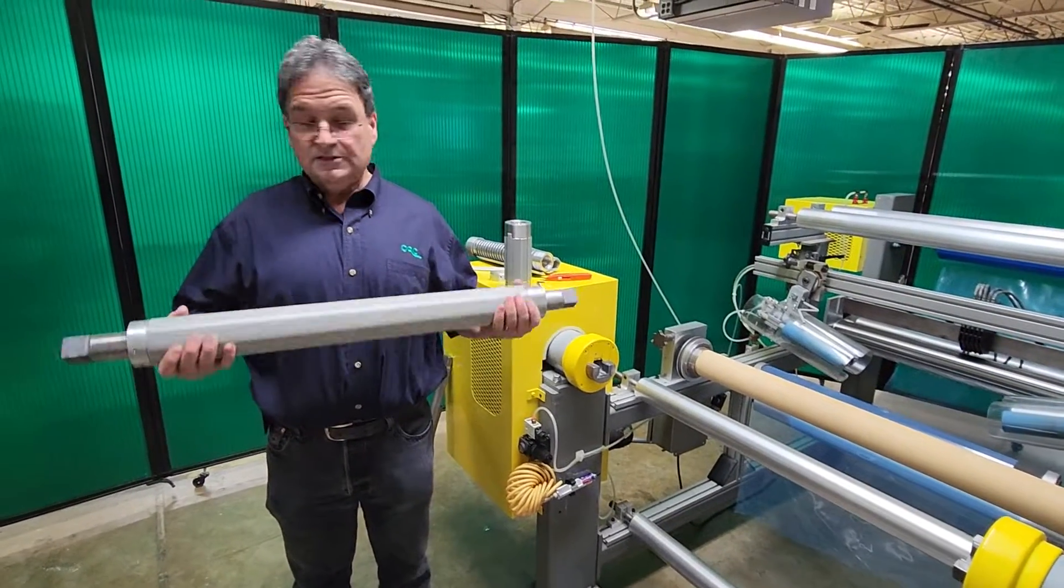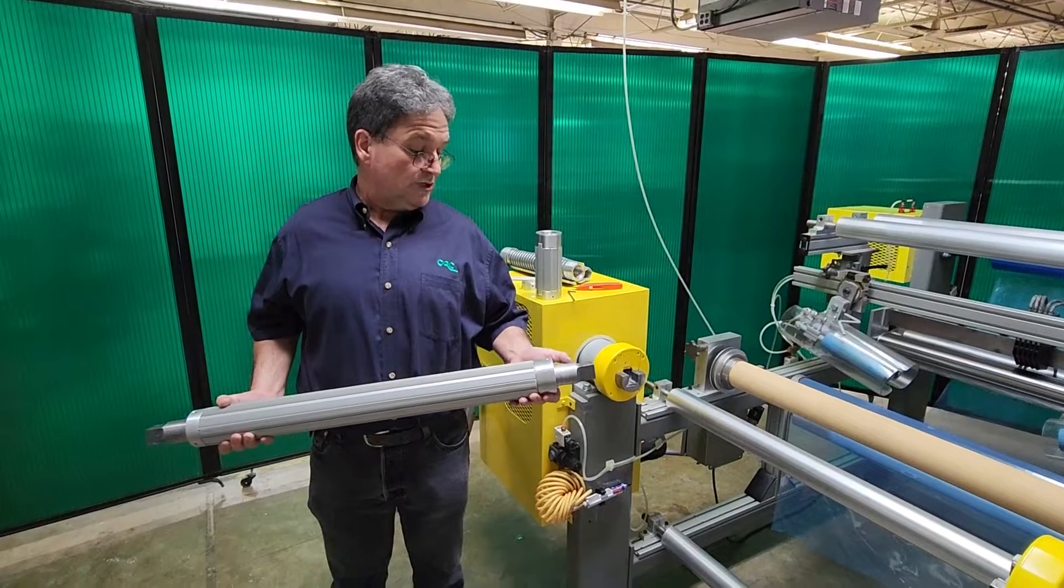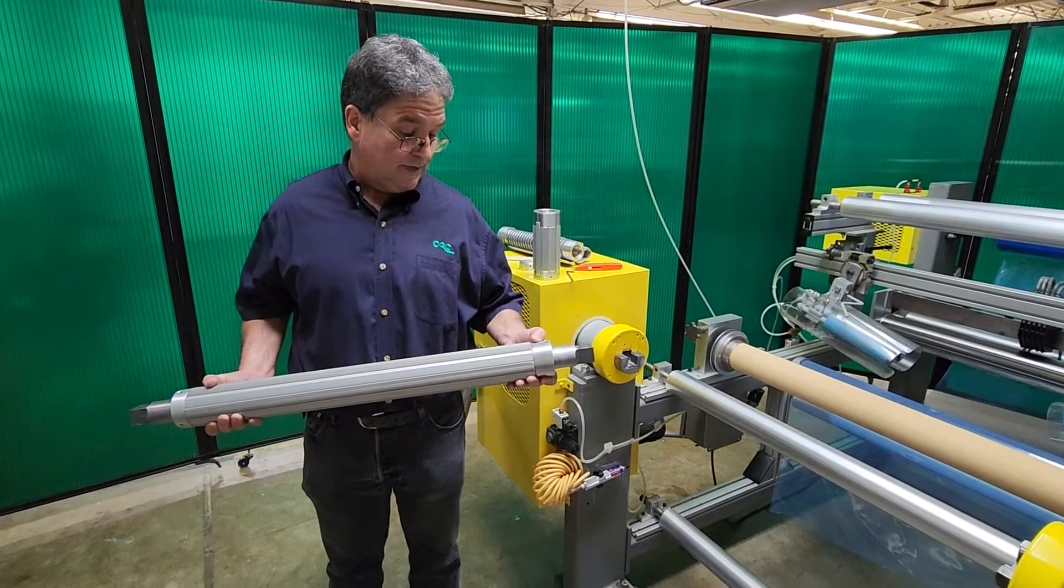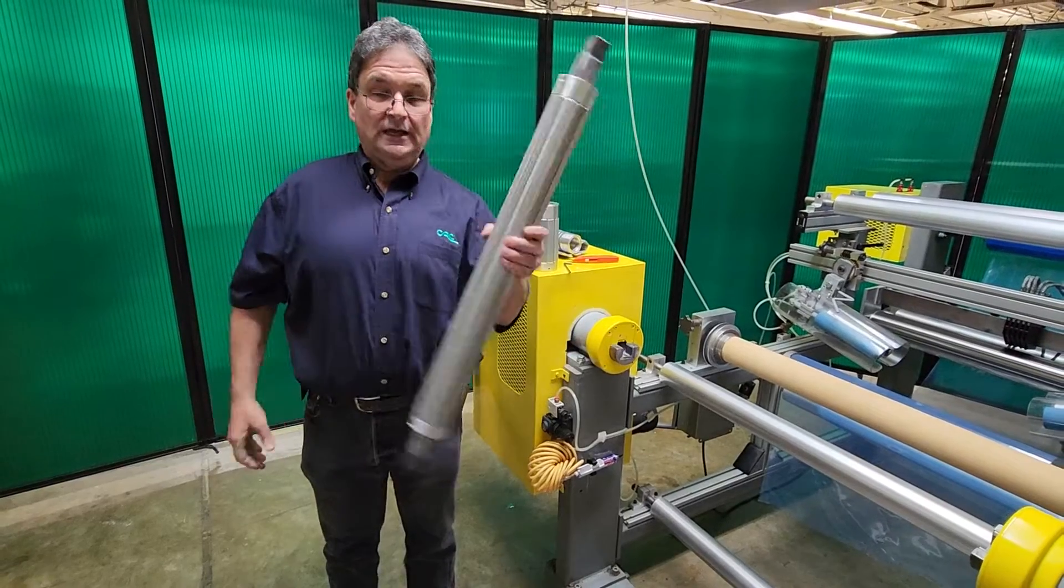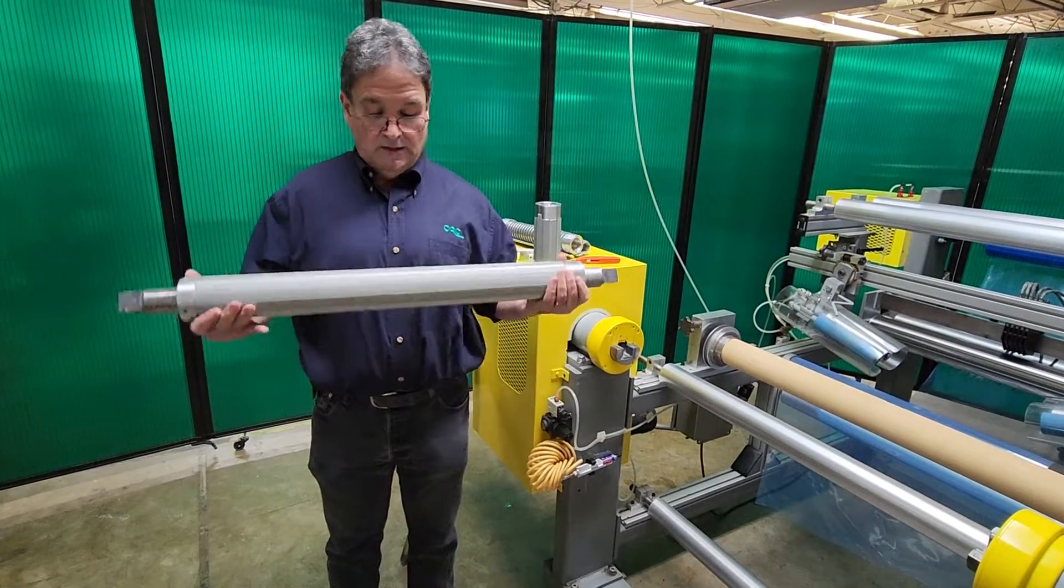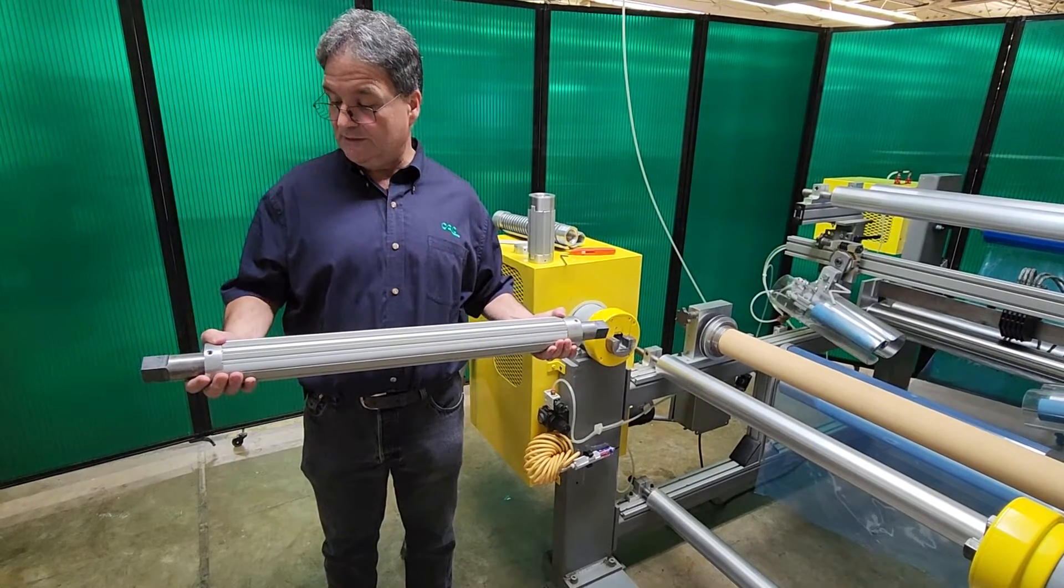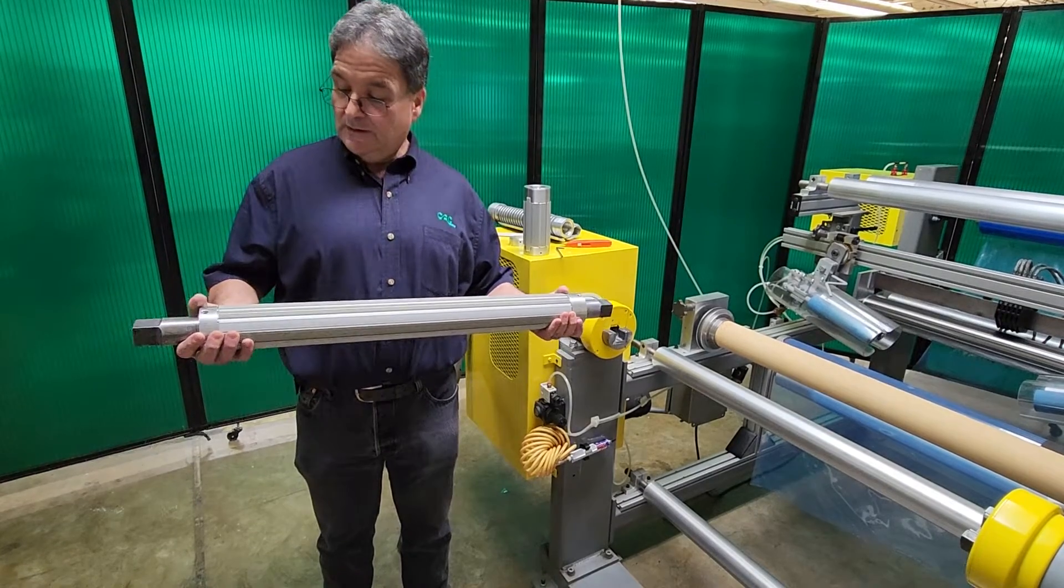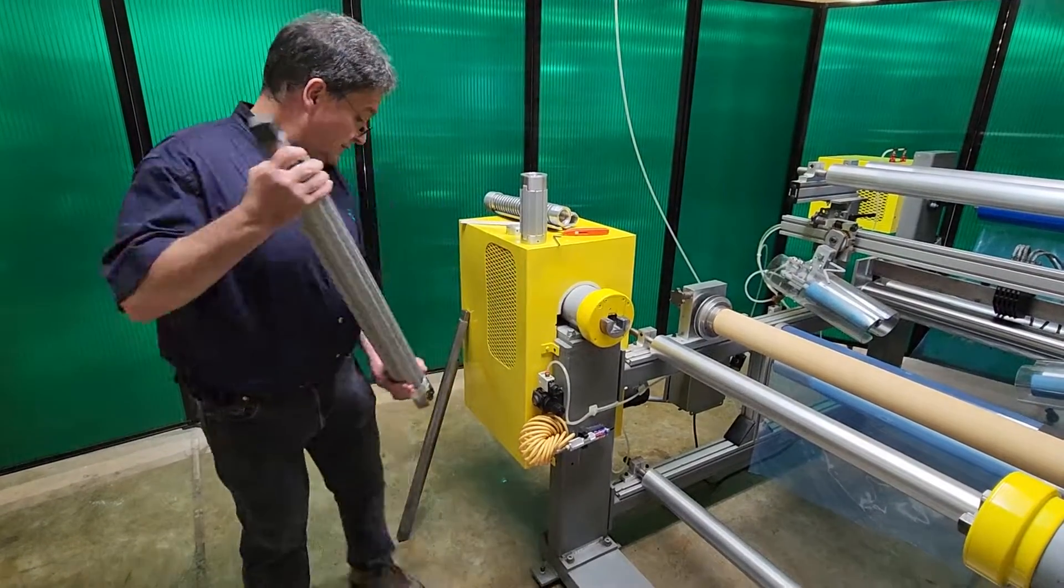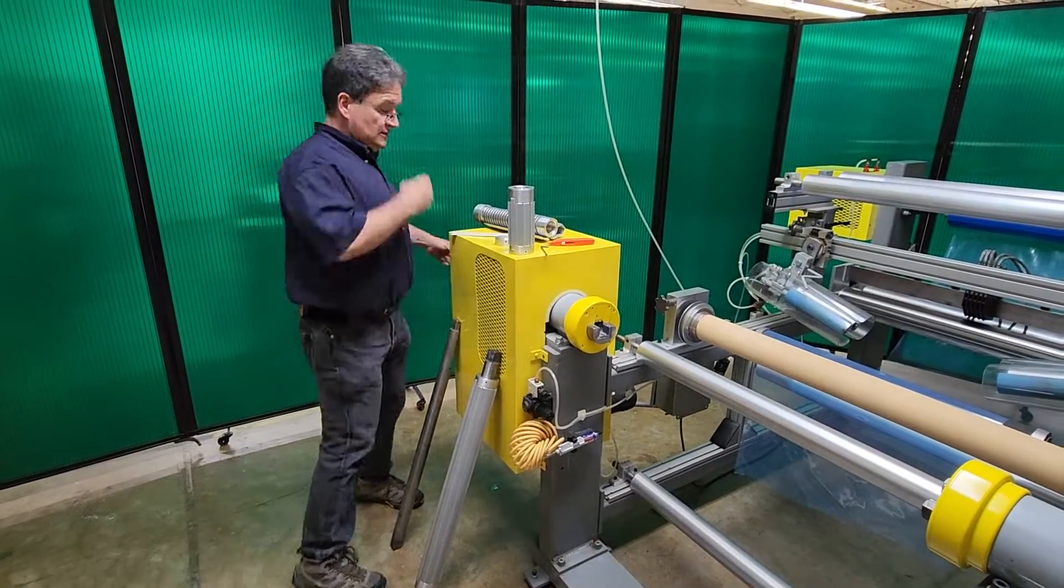One thing I want to mention, this whole assembly including the through shaft and the air shaft is only 19 pounds so it's very easy for operators to handle. You can handle it with one hand. This one is about 26 inches long and we can handle very heavy rolls with a very lightweight air shaft.